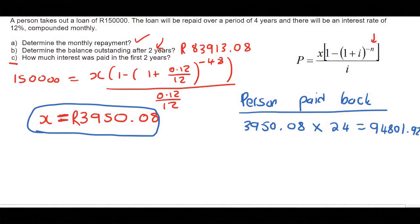So that's how much money this person has paid back. They physically paid that out of their wallet over two years.